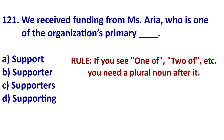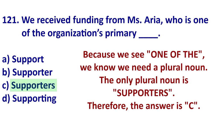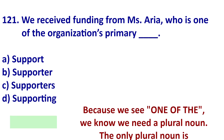Another example of a wrong sentence: 'One of the information was incorrect.' This is wrong because 'information' is non-countable and not plural. So you could say, 'Some of the information was incorrect.' Because we see 'one of,' we need a plural noun, and our only option is C: 'one of the organization's primary supporters.'